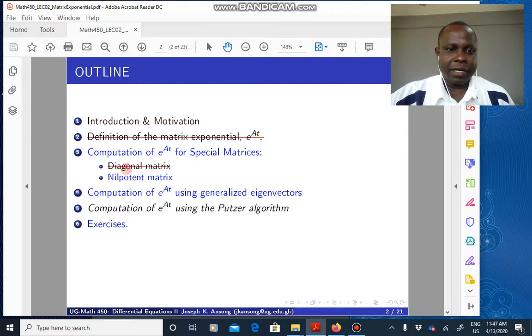We've looked at a special case when the matrix A is a diagonal matrix. So here we are going to continue with the case of nilpotent matrix.